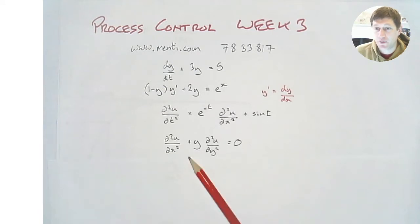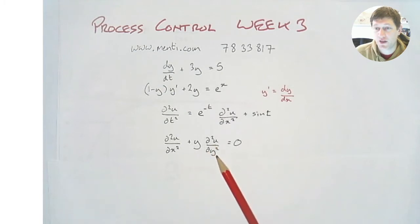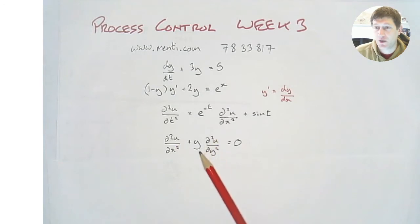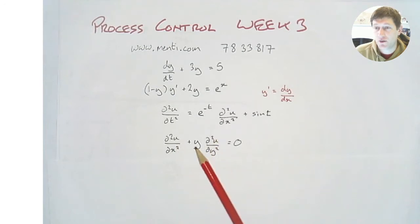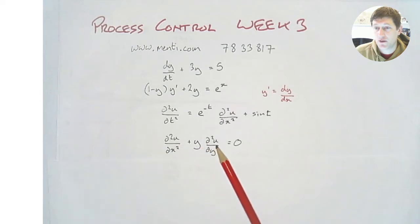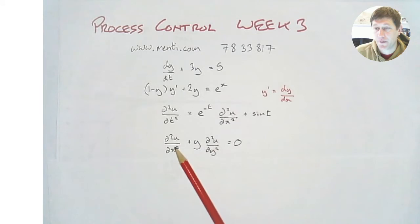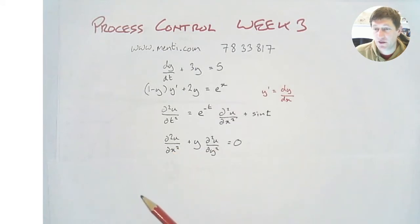Another example: we can see quickly it's a partial differential equation in x and y. It's second order, and this one is also linear. So this is another second order linear partial differential equation.